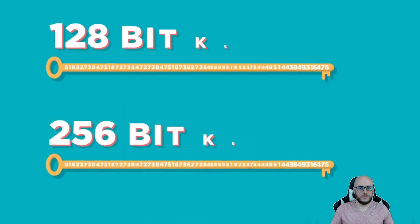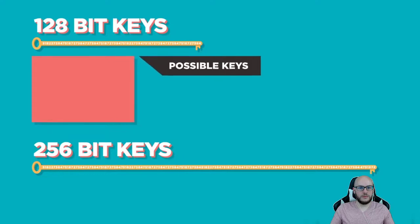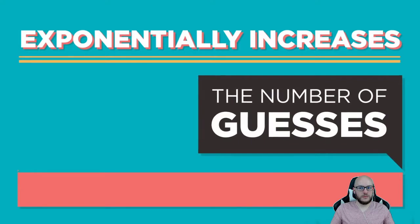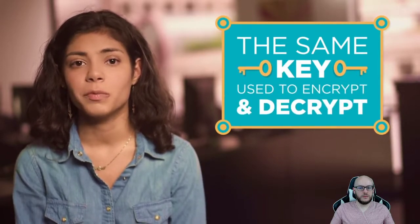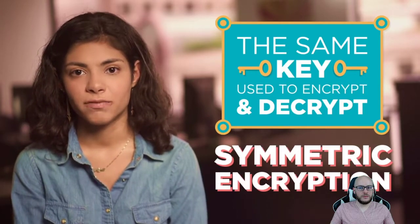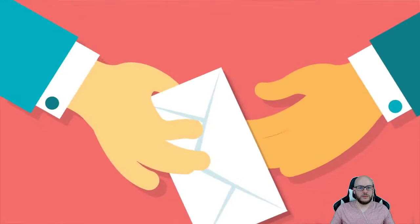We've already had to increase the standard key length to keep up with the speed of computers. The good news is, using a longer key doesn't make encrypting messages much harder, but it exponentially increases the number of guesses it would take to crack a cipher. When the sender and the receiver share the same key to scramble and unscramble a message, it's called symmetric encryption. With symmetric encryption, like Caesar's cipher, the secret key has to be agreed on ahead of time by two people in private.